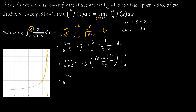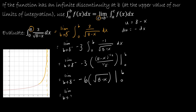Doing a little cleanup: keeping the negative 3 on the outside, dividing by one-half turns into multiplying by 2, giving negative 6 on the outside. Then I have the square root of (8 minus x) from 0 to B. Using the fundamental theorem of calculus — and I can't stop writing the limit until I've actually evaluated it — I keep the negative 6 on the outside and get: square root of (8 minus B) minus the square root of (8 minus 0).